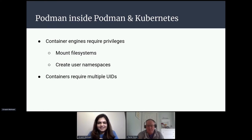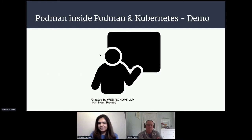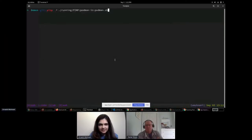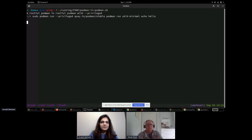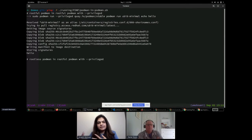It takes quite a lot to run Podman inside a container. Container engines require a fair amount of privileges — they need to be able to mount filesystems, use the clone syscall to create user namespaces, and containers usually require multiple UIDs. We've put together a demo showing how Podman works both inside a Podman container and within a Kubernetes container. The easiest way to run Podman within a container is to use the --privileged flag, which gives the container processes elevated capabilities similar to the host.